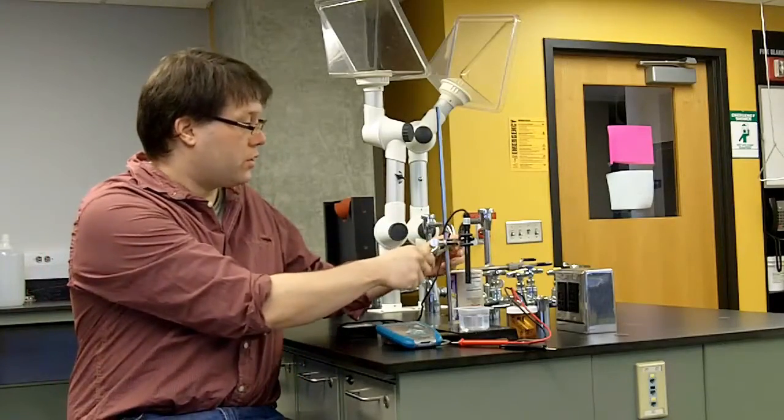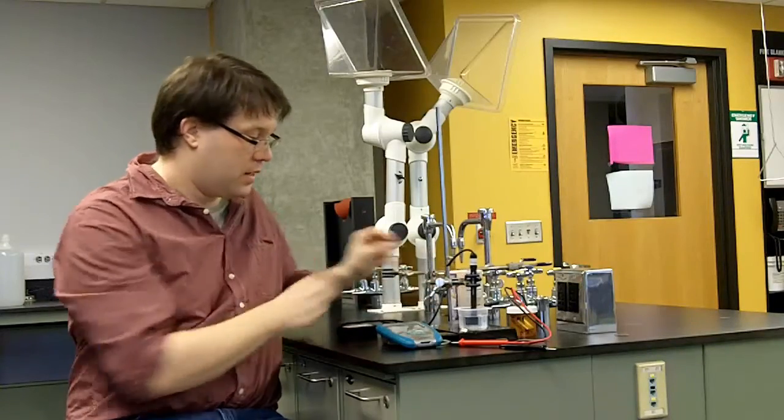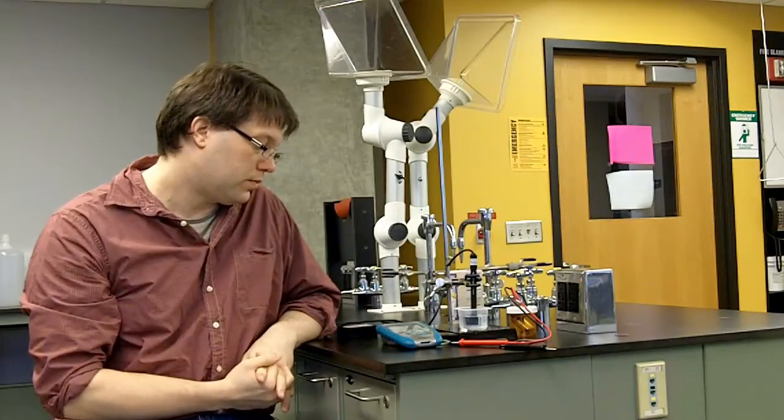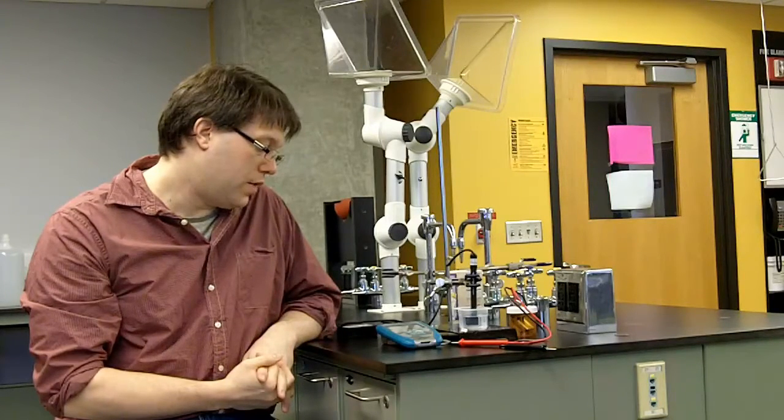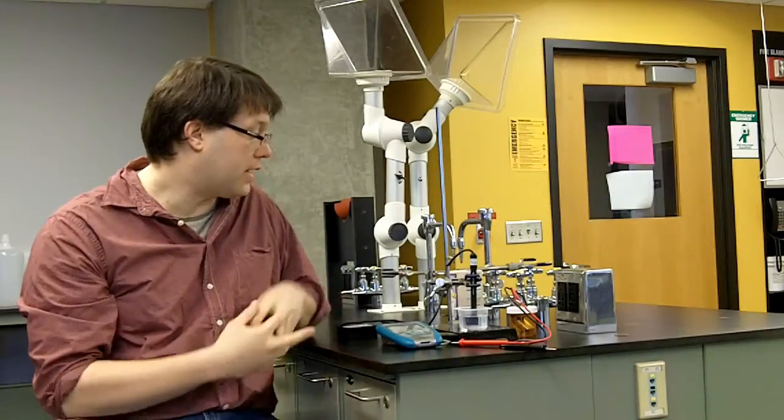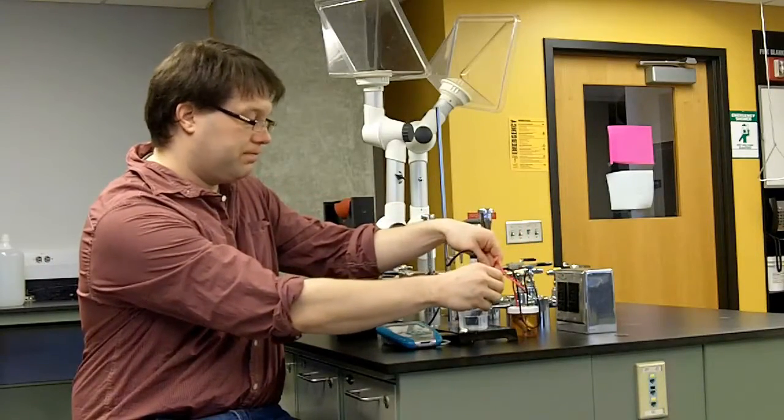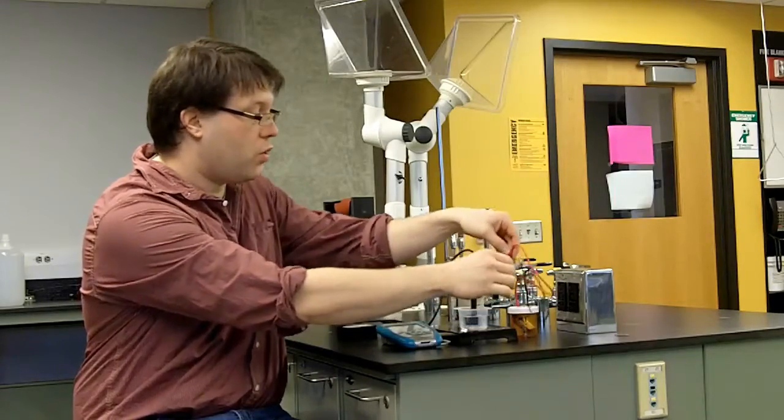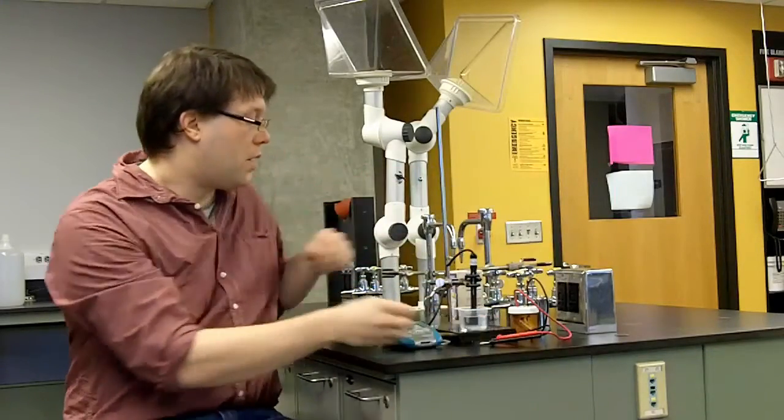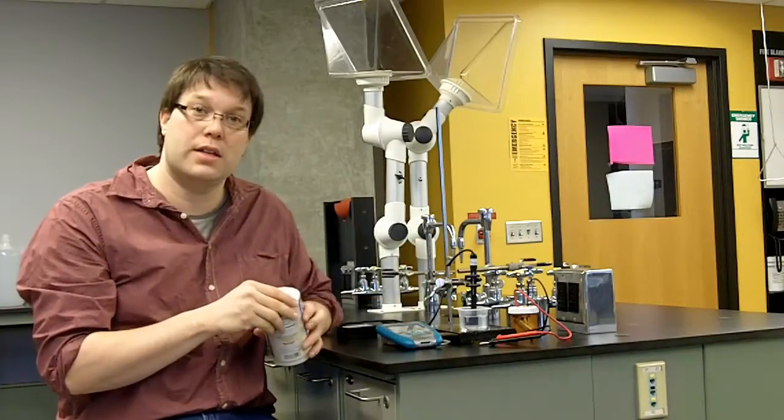So to test it first we will put the digital probe into it and see what it says. And it is reading about 6 µS per centimeter. So not very high conductivity at all. And if we place the LED probe in it, it does not light up at all. So this water is non-conductive and that is because the ions have been removed from it. You need to have ions in your water so that it is conductive.